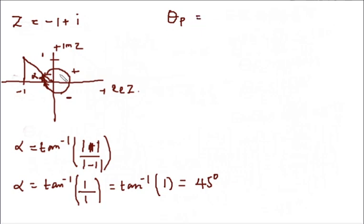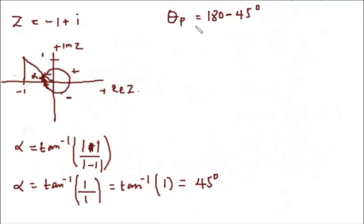We know that from the positive real axis to the straight line is 180 degrees, including alpha. To find the angle excluding alpha, we have 180 minus 45 degrees. So theta_p equals 180 minus 45 degrees, which is 135 degrees.